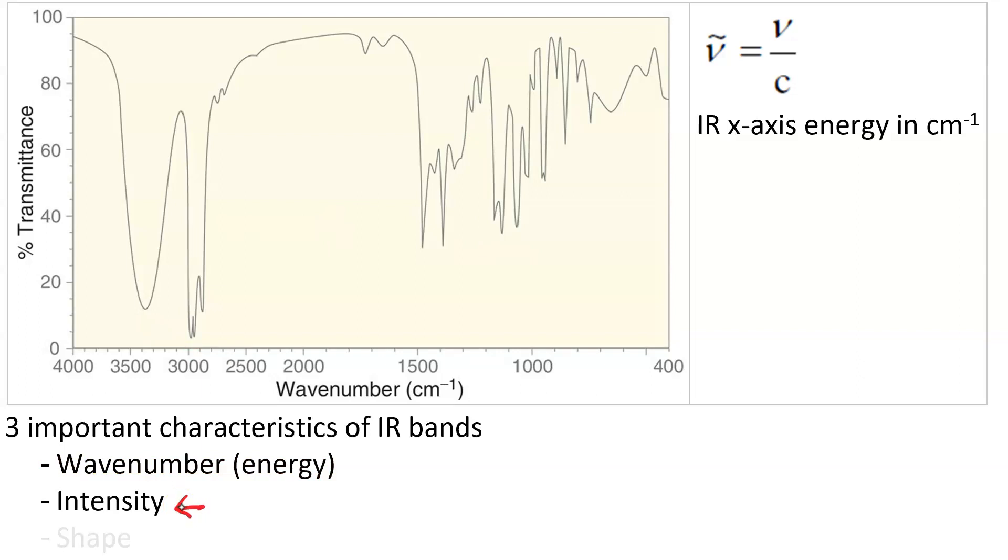We also have to pay attention to intensity. That peak, for instance, is very low intensity. We say it's a weak absorption. This peak is medium absorption. These are strong. High intensity.